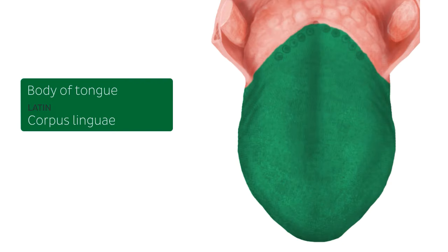The body makes up the anterior two-thirds of the entire tongue. There is also this depression known as the median sulcus, which runs vertically along the middle of the body of the tongue.